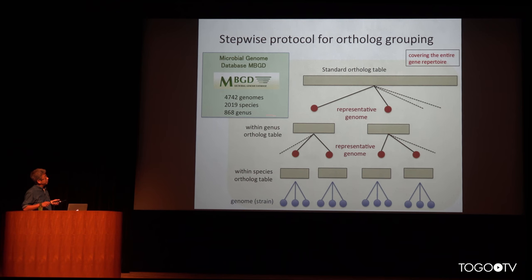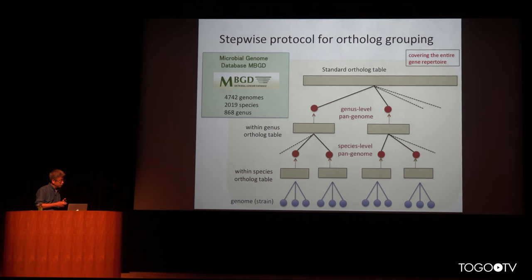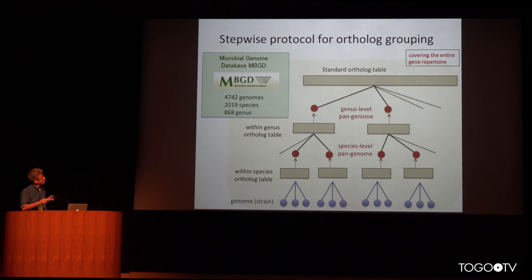Finally, we create a standard ortholog table covering the entire taxonomic range. In the previous version, we created each ortholog table independently by choosing a representative genome beforehand. The new protocol creates ortholog tables in a step-wise manner: first a species-level ortholog table and pan-genome, then a genus-level ortholog table and pan-genome, and finally the standard ortholog table.